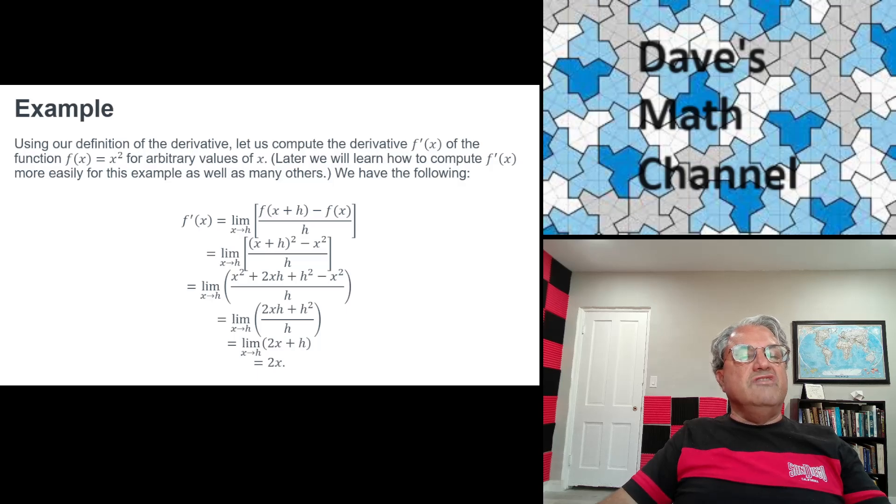Now we have to plug in what f is. f of x is x squared. So f of x plus h is x plus h quantity squared minus x squared over h. And now we just use the binomial theorem to expand x plus h quantity squared. That's easy. It's just x squared plus 2xh plus h squared. And then we subtract out x squared. You'll notice that we get two terms that are equal to x squared that cancel. So when we cancel those terms, we just get the ratio 2xh plus h squared all over h. Now I think you'll notice that in the numerator, we have two terms both divisible by h. So we can factor out h from the numerator. We're just left with 2x plus h.